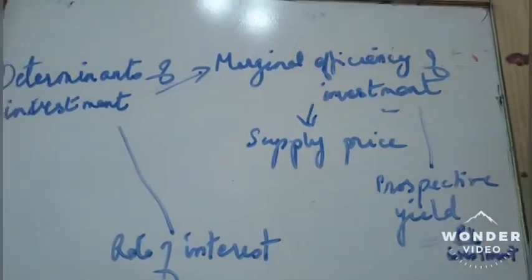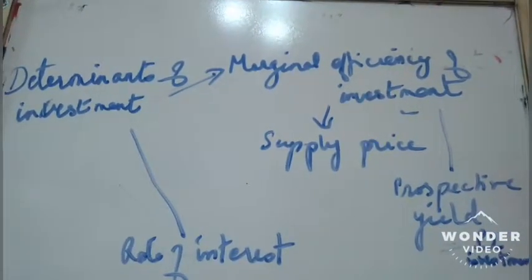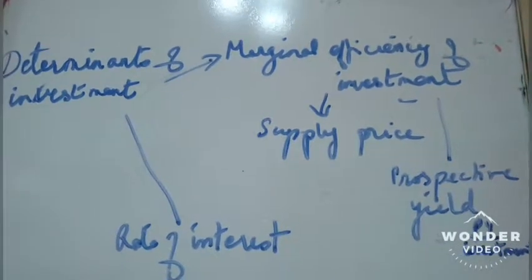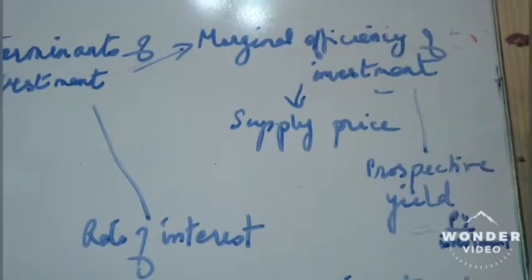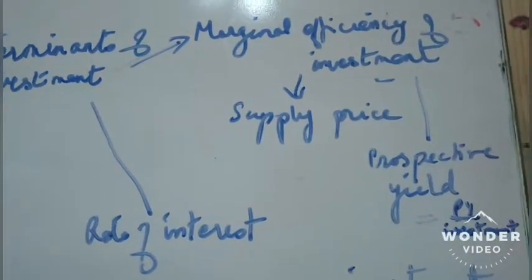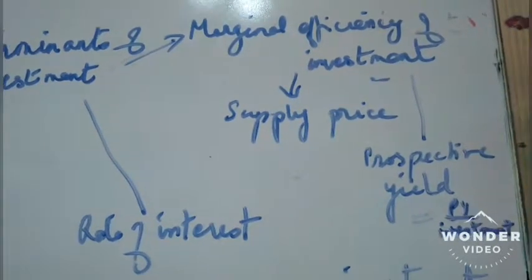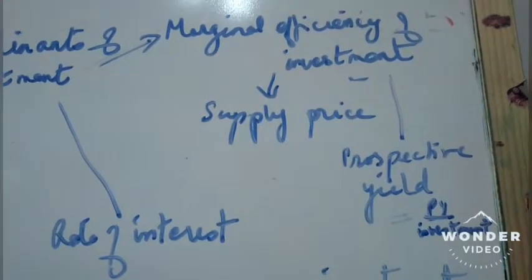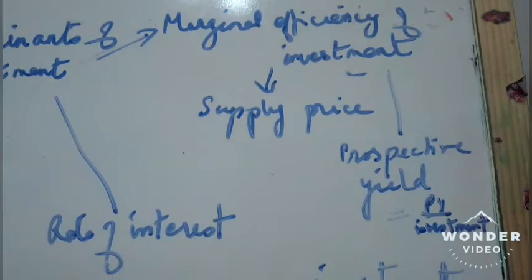Then there is prospective yield — how much return you are getting from the investment. You compare prospective yield with the supply price. For example, your supply price is 10,000 rupees, and you get 1,200 rupees as return from production, then spend 200 rupees on maintenance, leaving a net return of 1,000 rupees. So marginal efficiency of investment is 1,000 divided by 10,000.